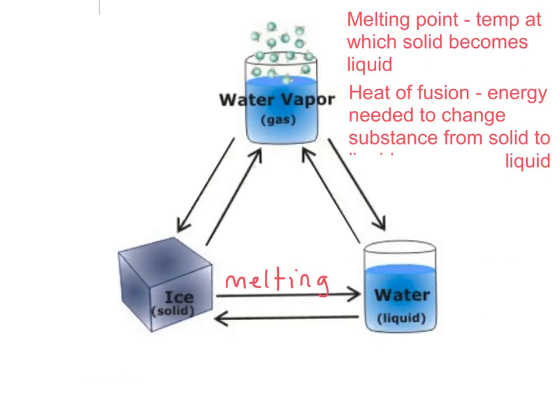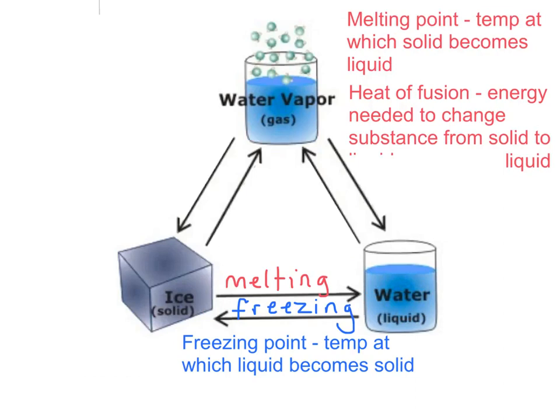So what would the reverse process of melting be? You all know that it would be freezing. And the freezing point of a substance is the temperature at which that substance as a liquid will turn into a solid. Take note that when a substance freezes, energy is removed from it.